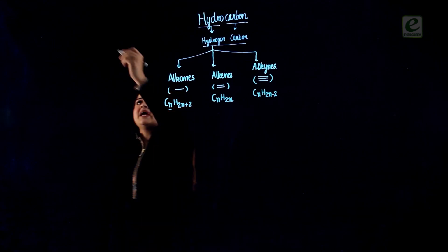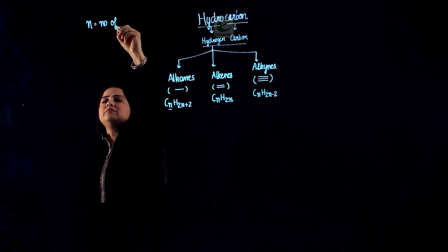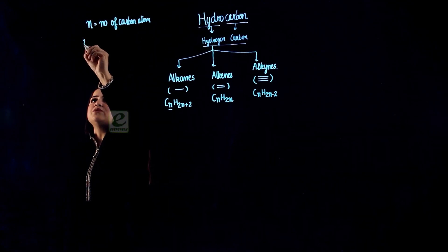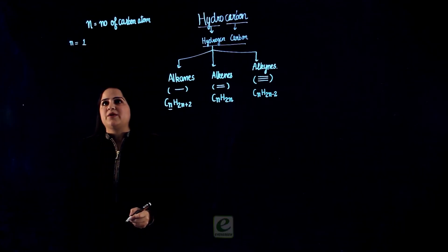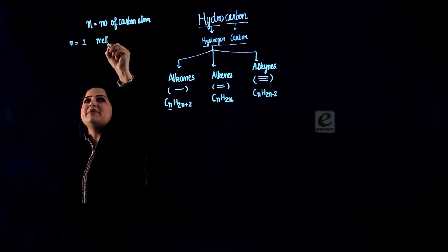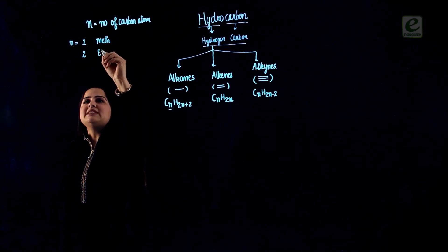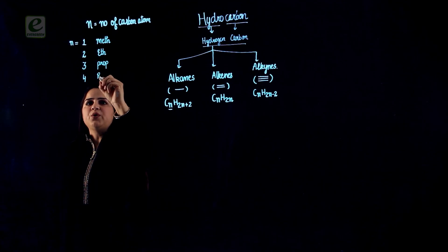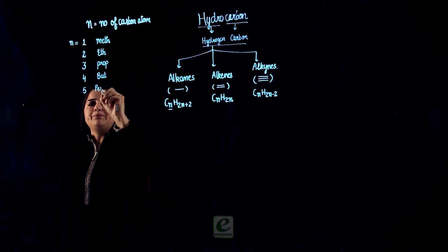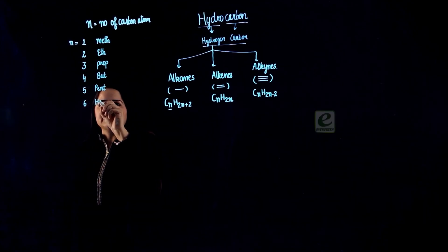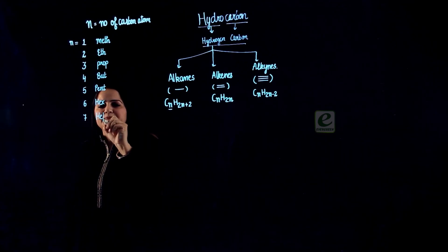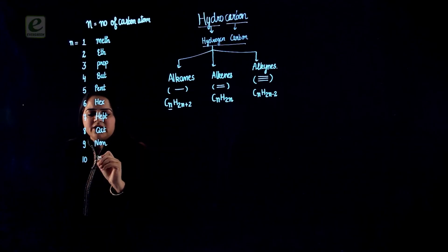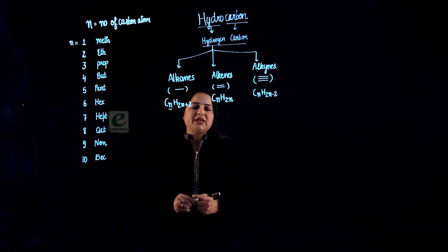If we talk about N, N refers to the number of carbon atoms. It can be from 1 to million. Here we will discuss N having values from 1 to 10. If N is 1, we use the word root meth. If N equals 2, we use eth. If N is 3, we use prop. If it is 4, we use beut. If it is 5, we use pent. If it is 6, we use hex. If it is 7, we use hept. If it is 8, we use oct. If it is 9, we use non. And if it is 10, we use dec. N refers to the number of carbon atoms.